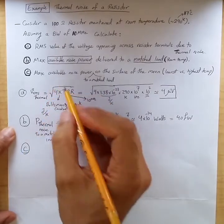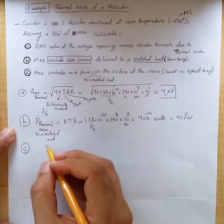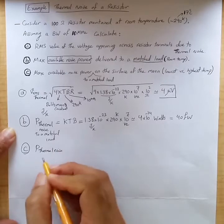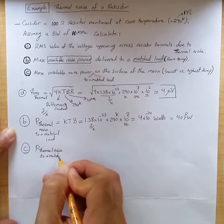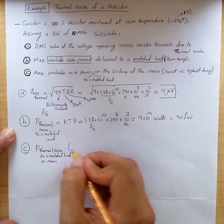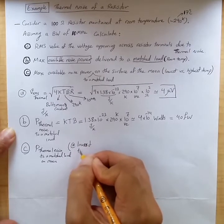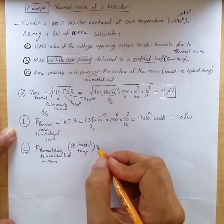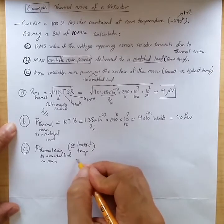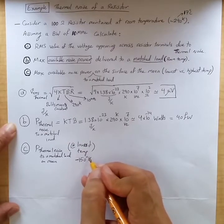Part C: what is the maximum available noise power to a matched load on the surface of the moon for lowest and highest temperature? So the thermal noise power available to a matched load on the surface of the moon for lowest temperature. It is known that on the dark side of the moon, at the lowest temperature, temperature can drop as low as minus 150 Celsius.